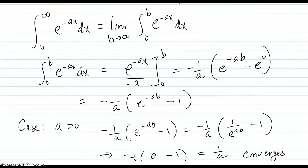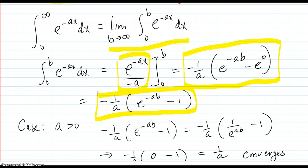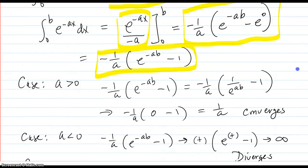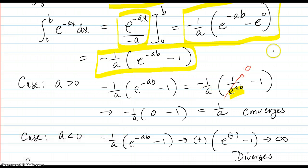Here's the mathematical justification. In definition form, it's a nice easy integral evaluated from 0 to b, with b going to infinity, giving this expression. In the case of a greater than 0, as b goes to infinity, we have 1 over e to the ab, which goes to 0. So you get negative 1 over a times negative 1, which is 1 over a — it definitely converges since a is just a number.